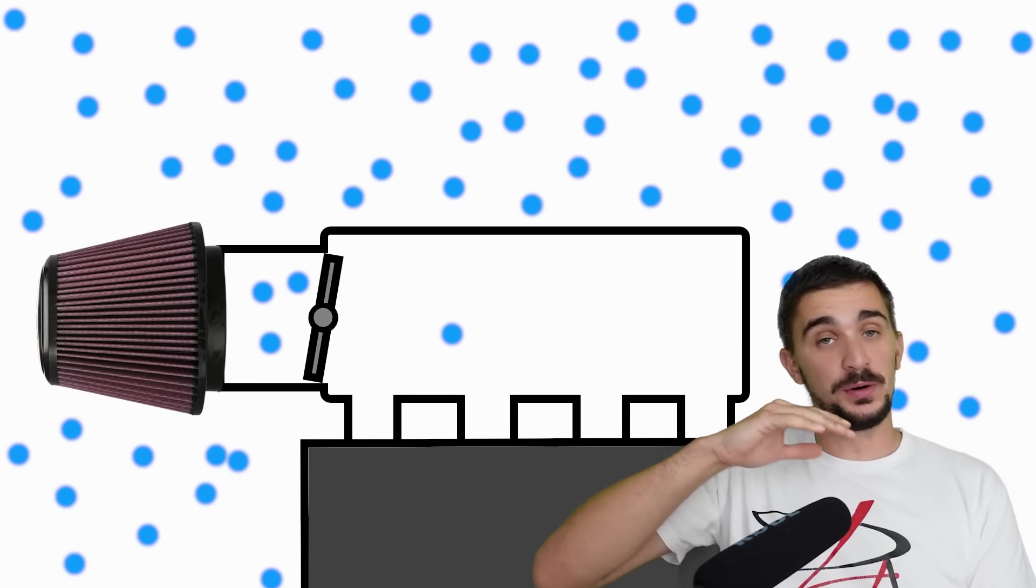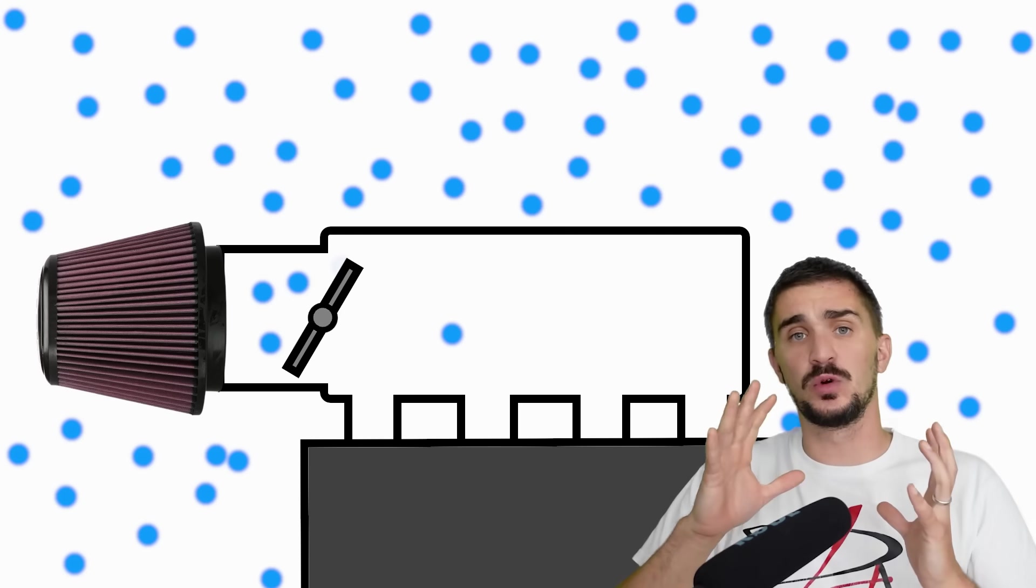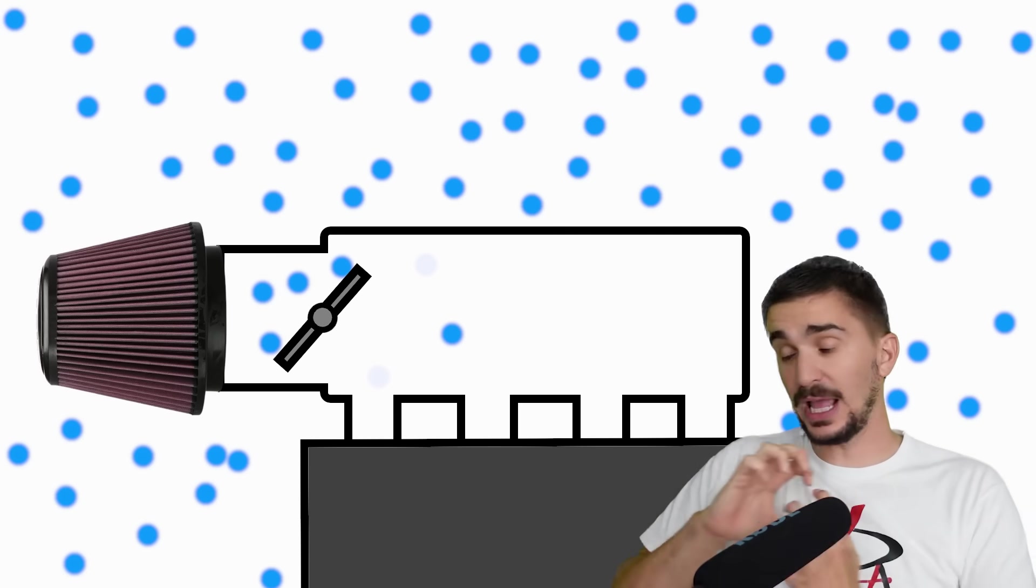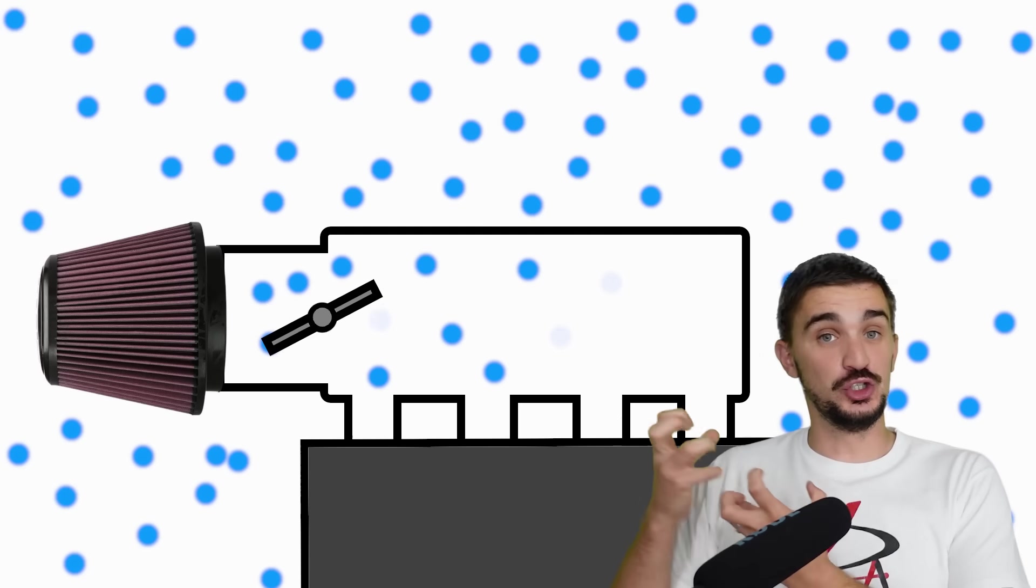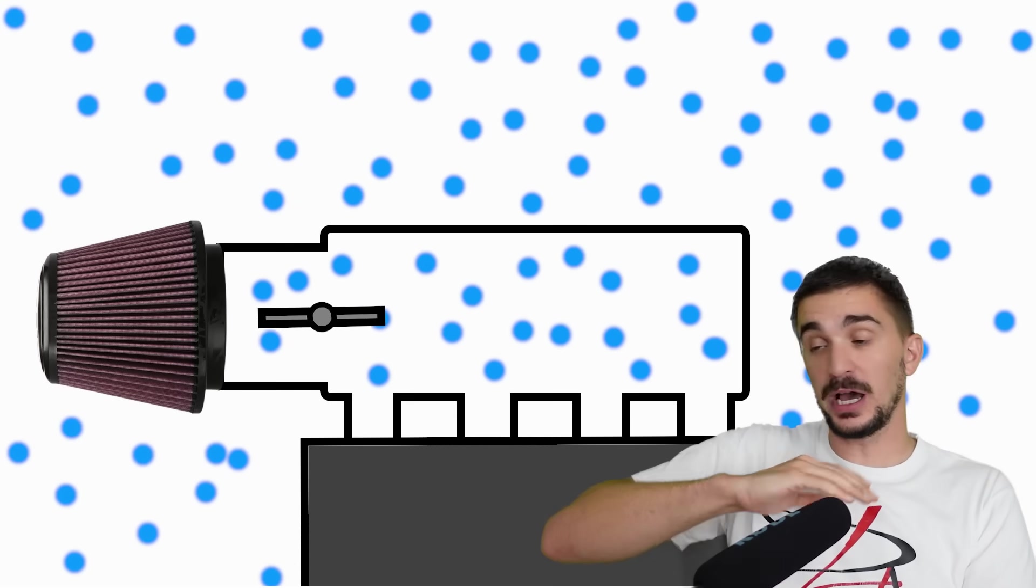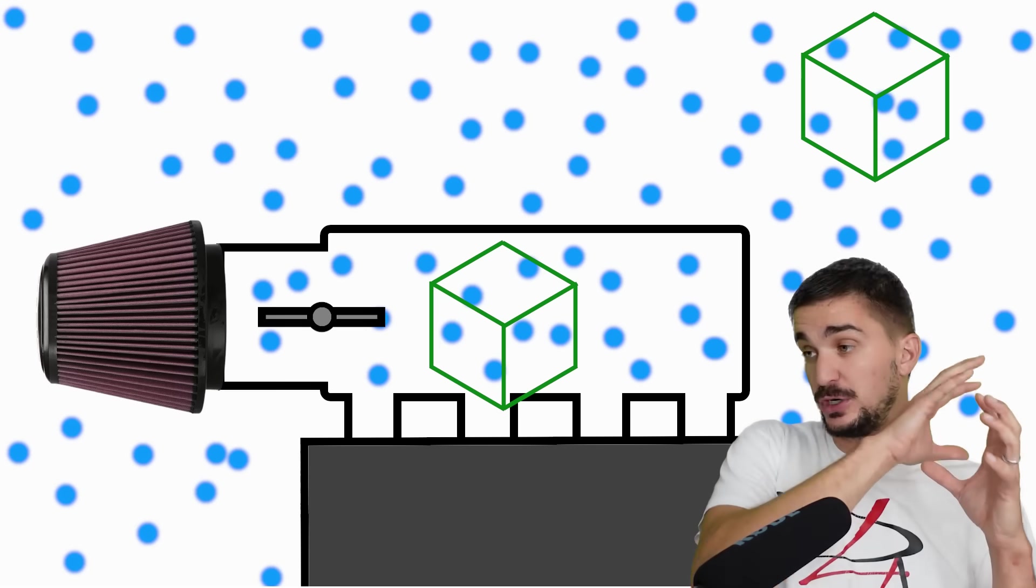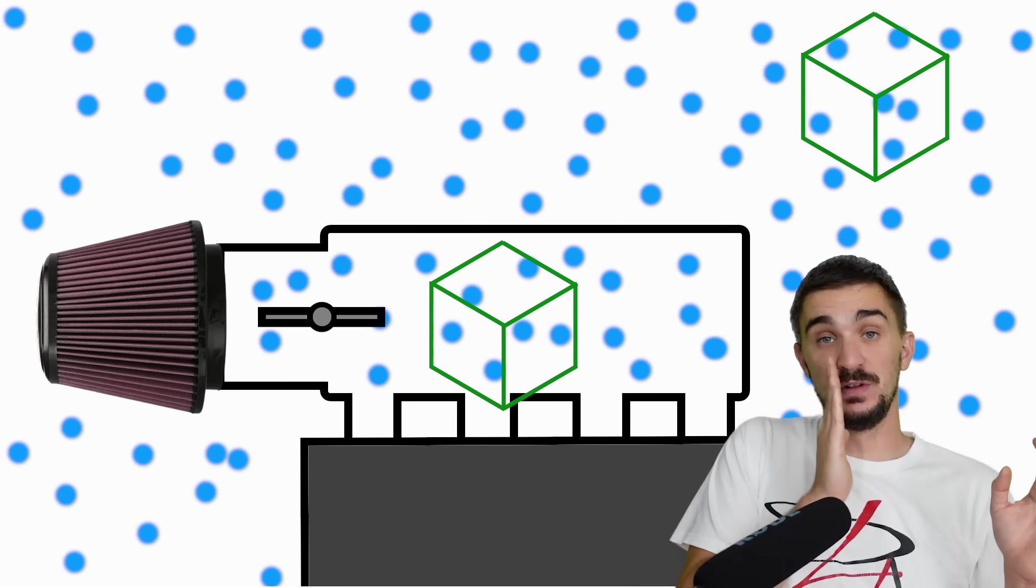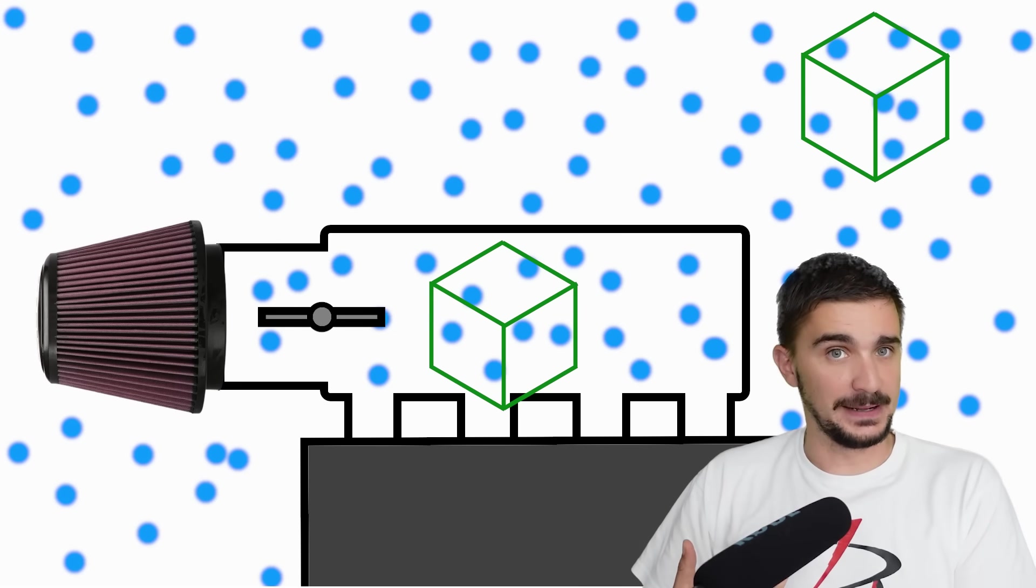Now, as the throttle plate opens more, more and more outside air is allowed into the intake manifold. In other words, we're allowing the atmosphere to enter the intake manifold. And of course, because the engine cannot consume the entire atmosphere, pressure inside the intake manifold at fully open throttle becomes equal to atmospheric pressure outside the engine. The pressure equalizes because we have removed the barrier between the atmosphere and the intake manifold. We open the throttle body.